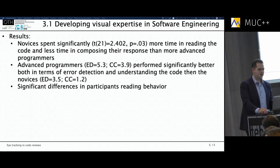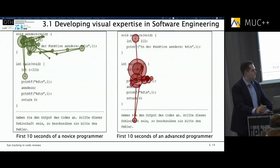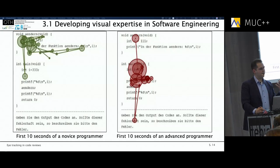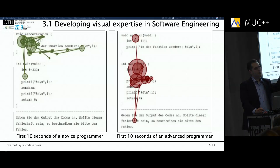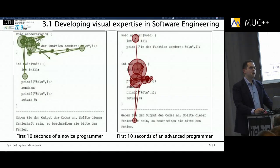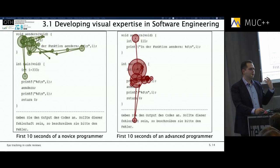The most interesting finding regards reading behavior. On one side you can see a novice during the first 10 seconds reading the code — the behavior is more like reading natural text, starting at the top and reading bottom down, left to right, like reading a novel. On the other side, the expert's reading behavior is much more focused on skipping through the text to get an overview of where things are located and how the code interacts. The two groups differ completely in reading behavior.